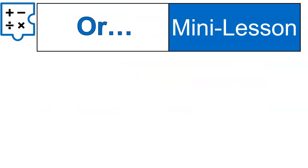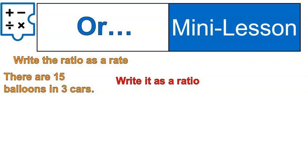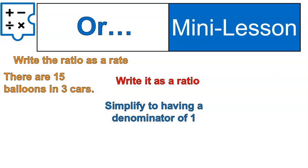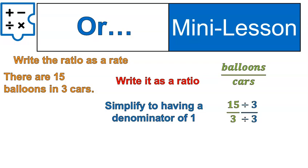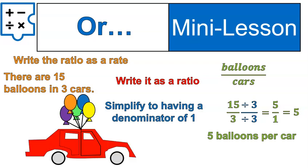You may see it in a different way, so I'm going to show you another approach. If you're asked to write the ratio as a rate — there are 15 balloons in three cars — what I'm going to do is simplify the fraction to having a denominator of one. If I have balloons over cars, I would have 15 over 3. To simplify that fraction, I divide by the greatest common factor and simplify it to 5 over 1. That's the same thing as 5. So there are 5 balloons per car. I can also write this as two ratios: 15 to 3 is equal to 5 to 1. And that's a unit rate.